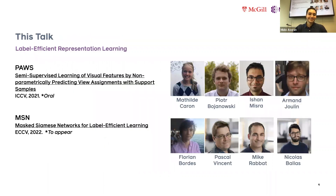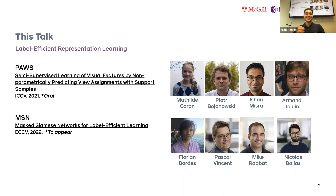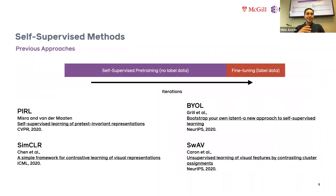Today I'll talk about two recent works focused on the label-efficient setting: PAUSE, published as an oral at ICCV last year, and Masked Siamese Networks, our recent work to be presented at ECCV this year. Current approaches for label-efficient representation learning include self-supervised pre-training with no labeled data — fully unsupervised — followed by fine-tuning end-to-end or training a head on top. Methods in this category include PIRL, SimCLR, BYOL, and SwAV.